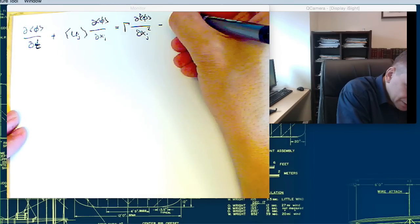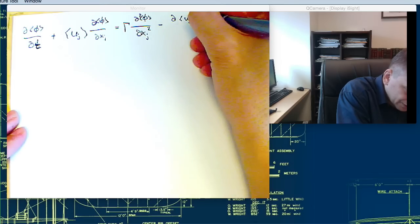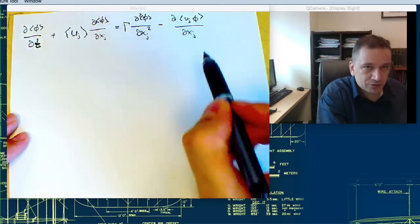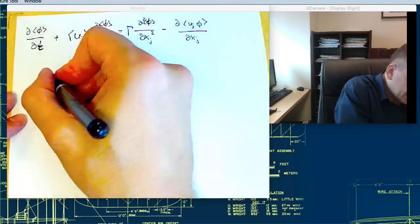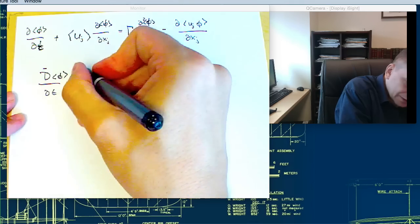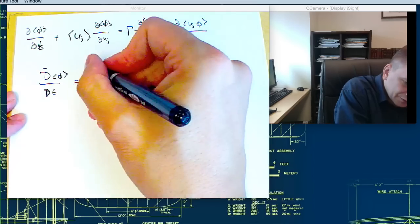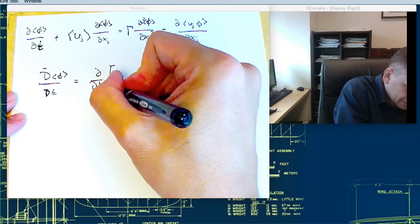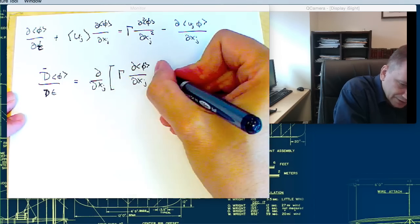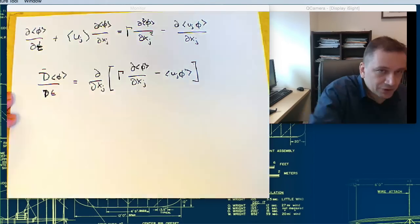Or drawing this together, you get ∂φ̄/∂t equals ∂/∂x_j[γ ∂φ̄/∂x_j - u_j' φ']. So again you have an additional term.